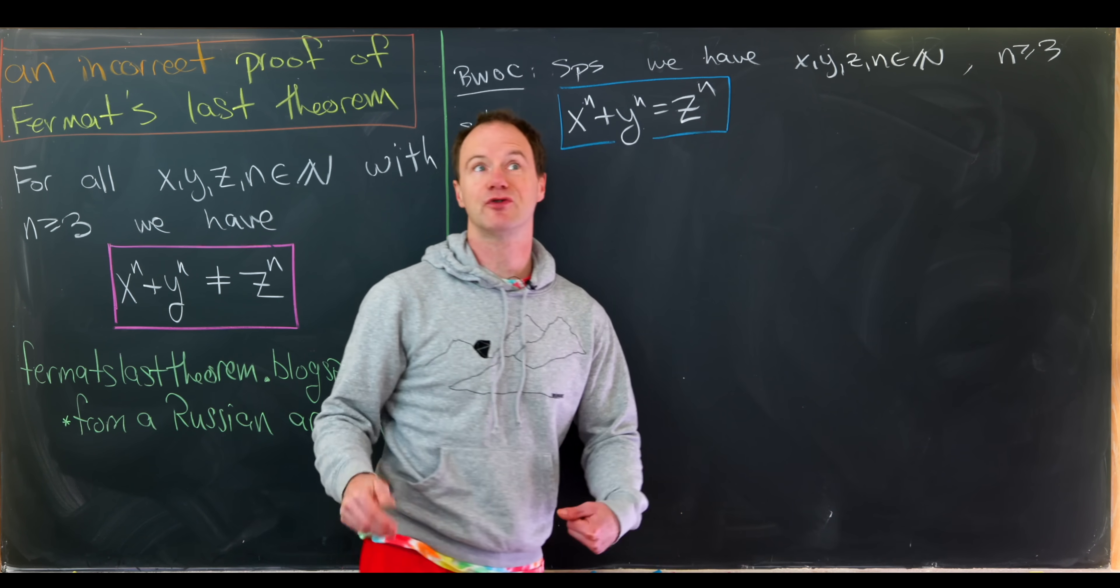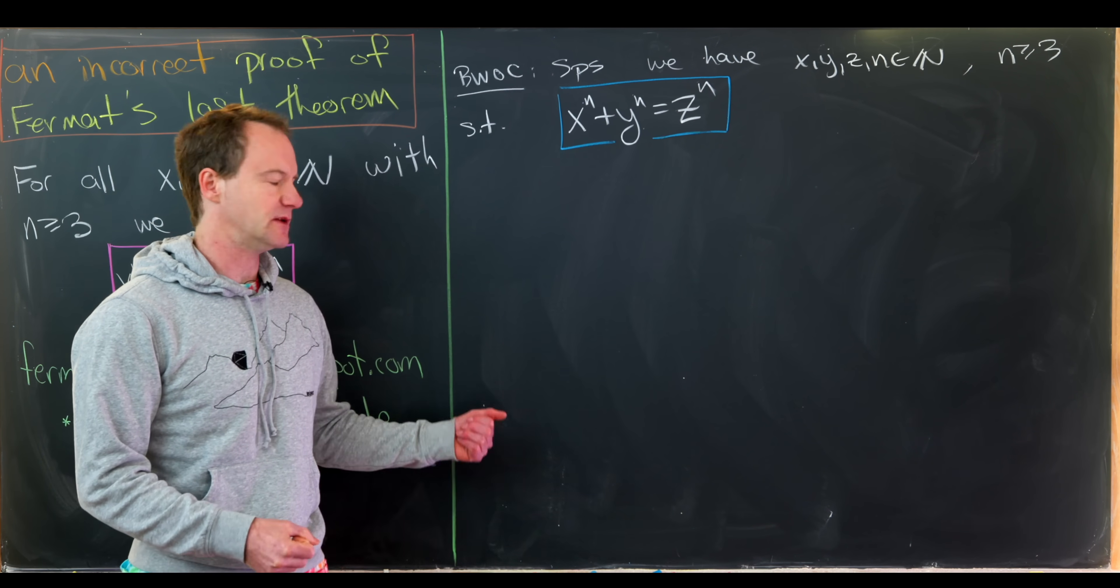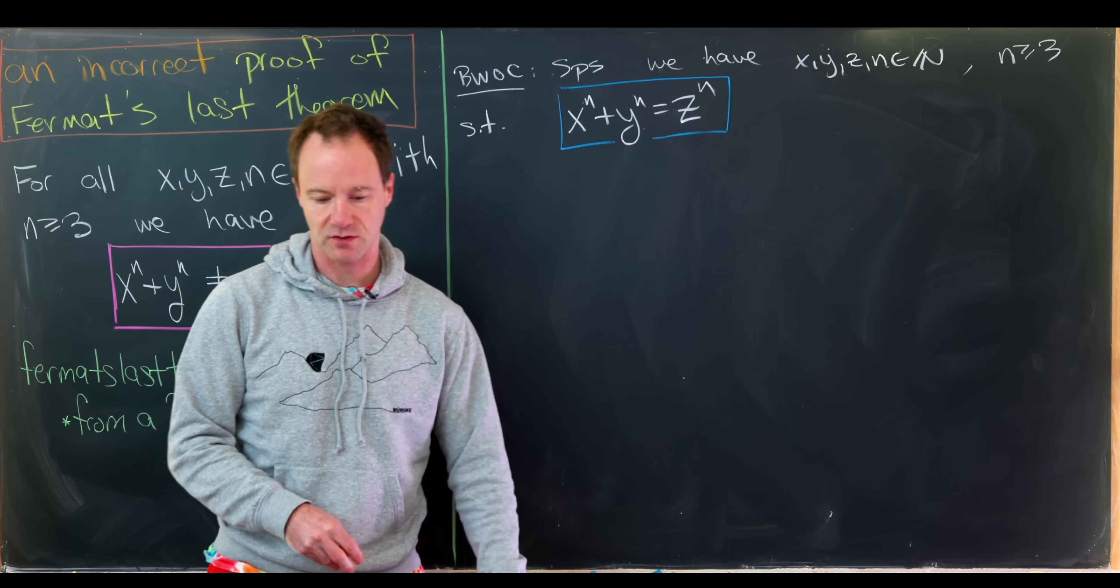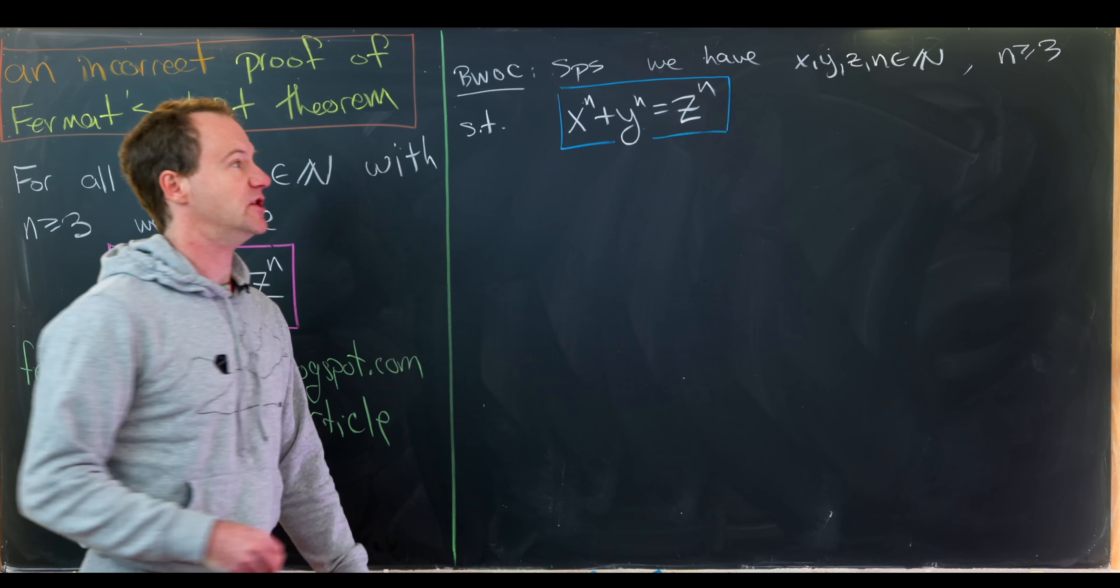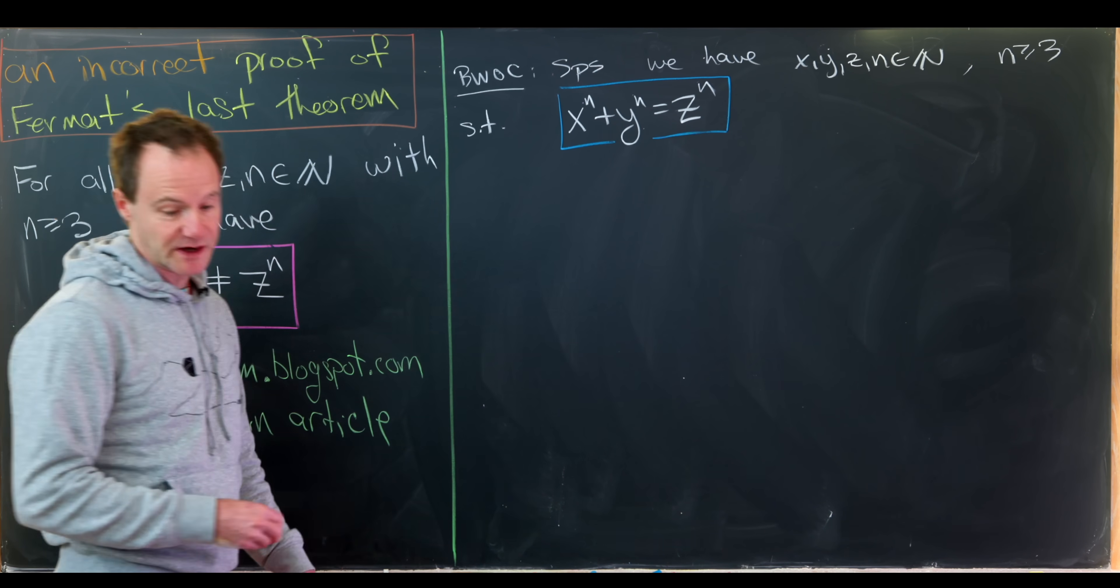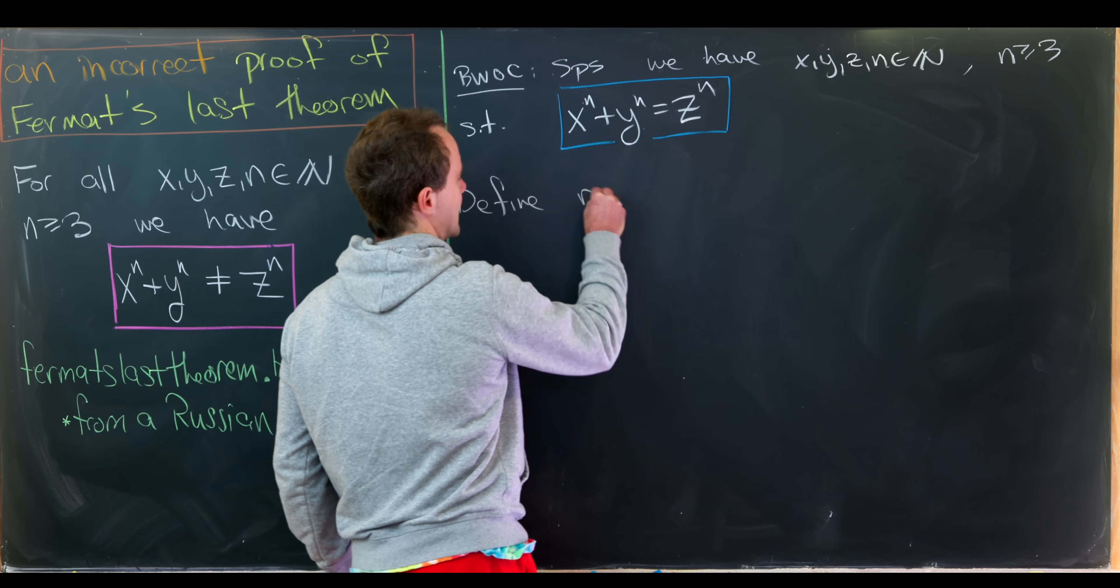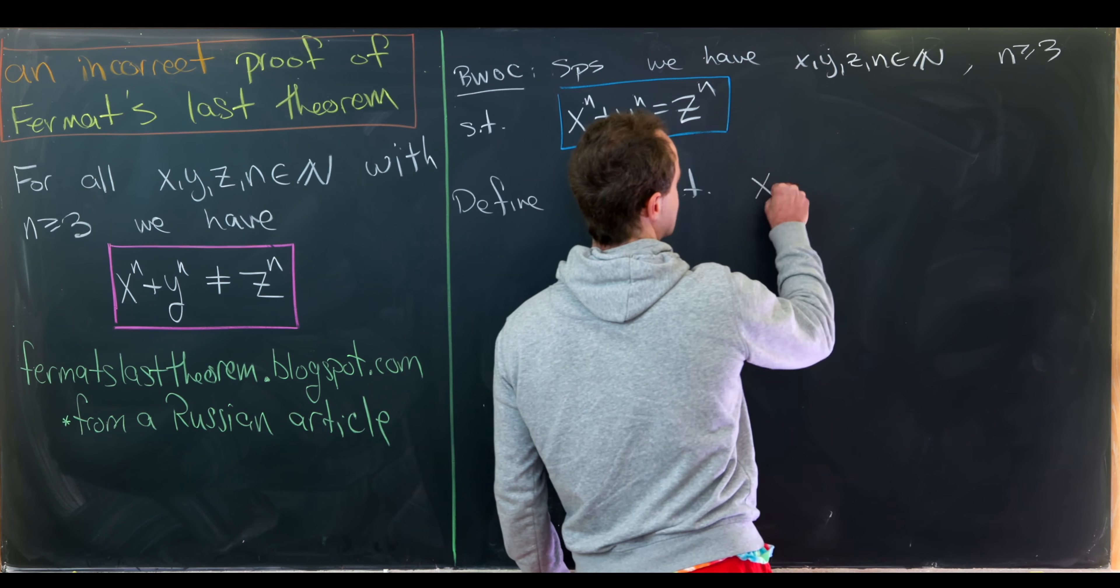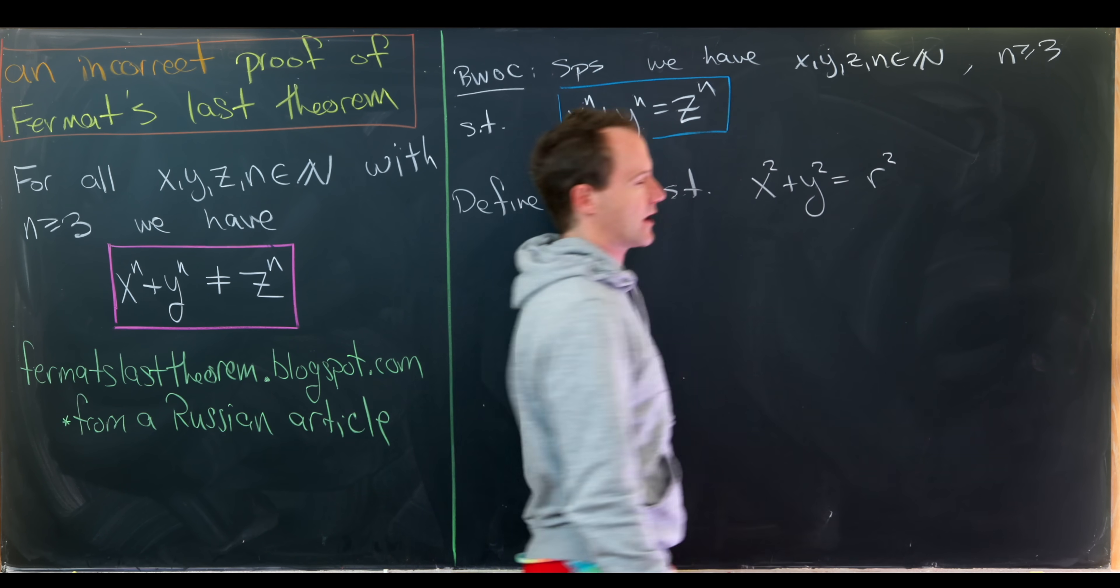Of course, we're going to produce a contradiction, but it won't be a real contradiction, and that's because we most definitely cannot fit the proof of Fermat's last theorem on this chalkboard. So now from here what we'll do is define a new number r, and this number r is a real number. So let's do that.